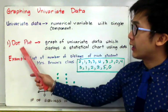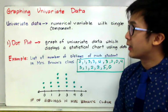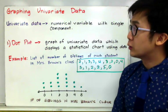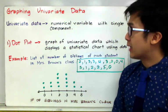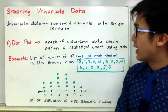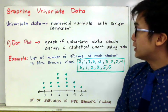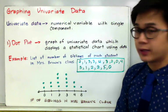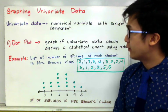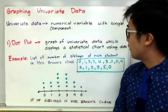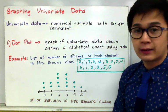Now we're going to use a dot plot in representing ungrouped data set or ungrouped univariate data set to create a graphical display. Now dot plot by definition are graph of univariate data which displays a statistical chart using dots. Now in this example we have the list of numbers of siblings of each student in Mrs. Brown's class.